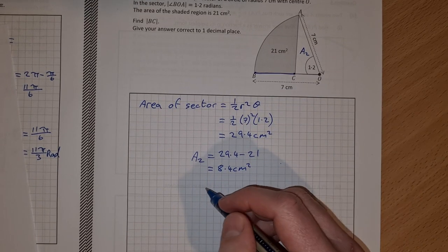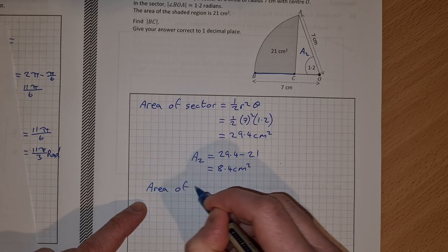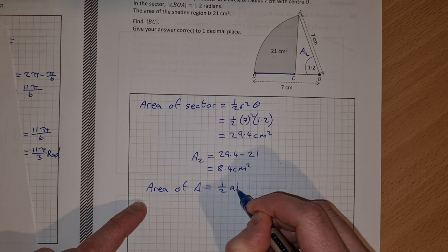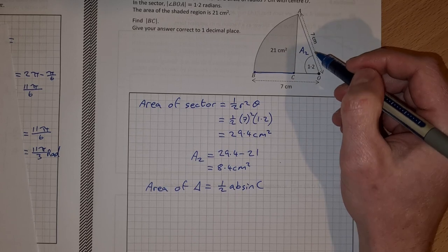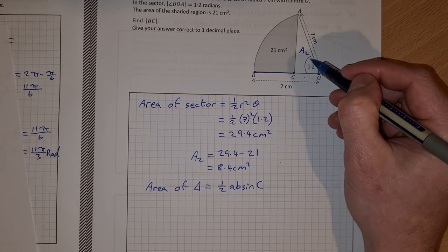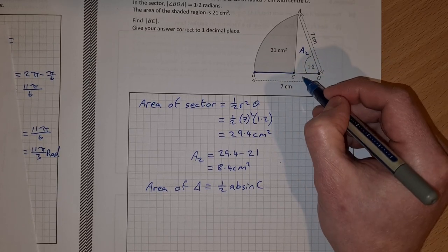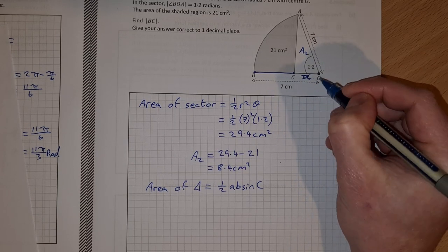Now, the area of a triangle is equal to half AB sine C. So if I have two sides and the angle between them, then I can find the area. But I have the area, I have one side, and I have one angle. So I can find this side here. We can call it A.